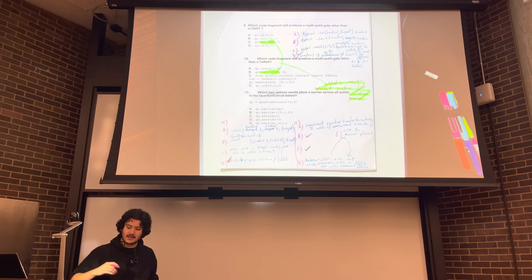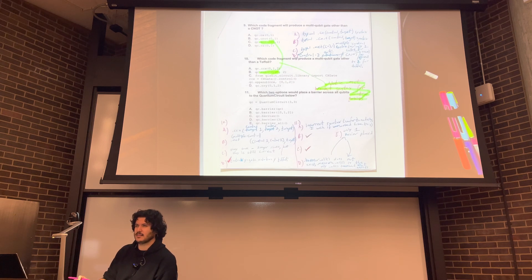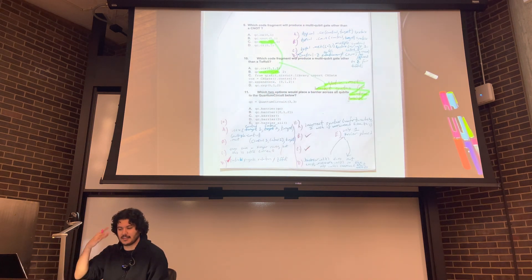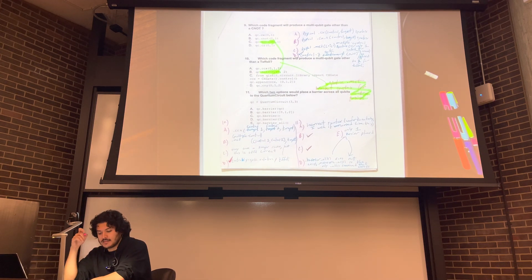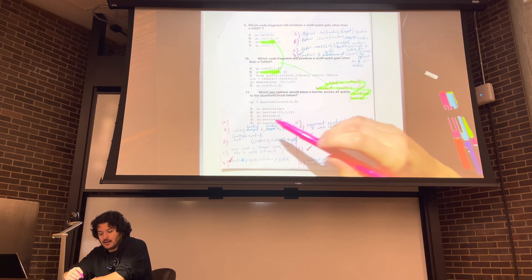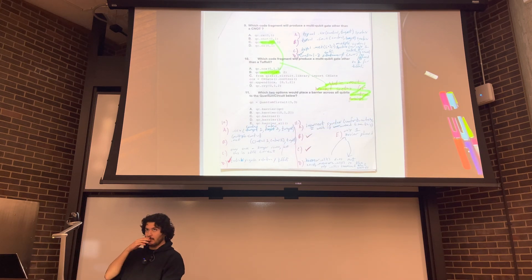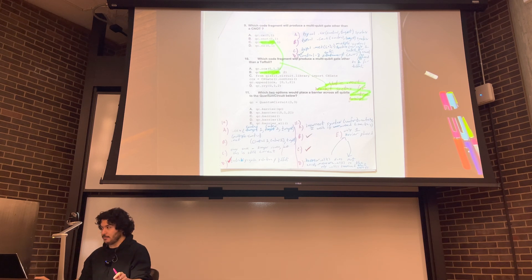Starting from the bottom like I typically do - I think I found the answers faster by going from the bottom. Starting from the bottom: qc.barrier_all. So what you want to do for this question and the questions before it is familiarize yourself with the quantum circuit API document that I pulled up.